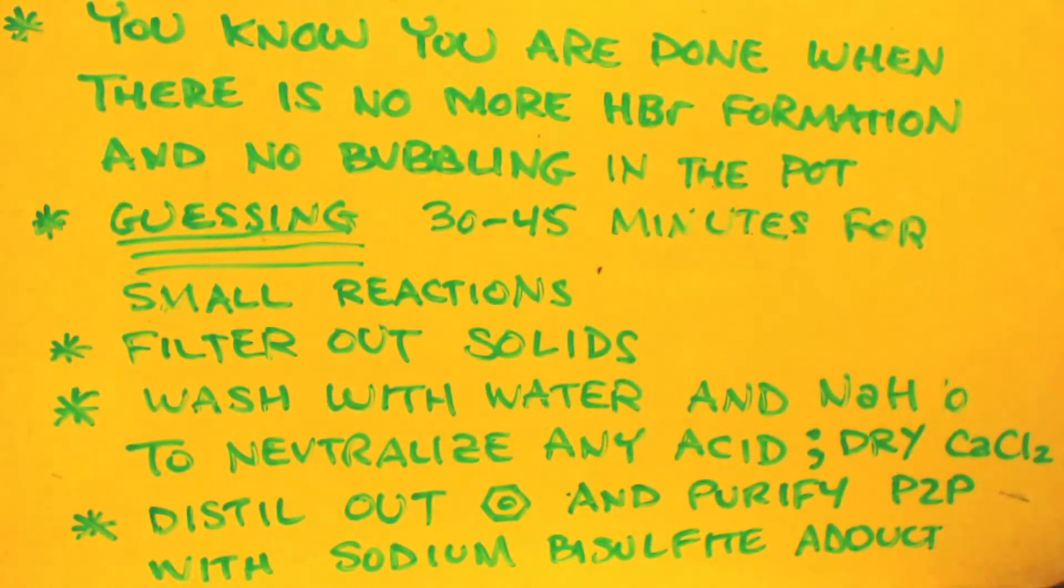And then you wash it again with some, and always cold water, when you do washing, it's done cold. Next wash with some sodium bicarbonate, and that'll help neutralize any of the acids that's in there. It'll form two layers. Obviously take the benzene layer that has your P2P, throw some calcium chloride in there that's anhydrous, or some anhydrous magnesium sulfate, or even molecular sieves, and dry up what you have left.